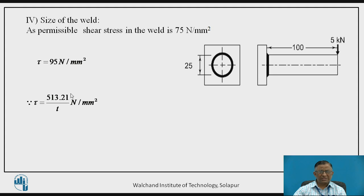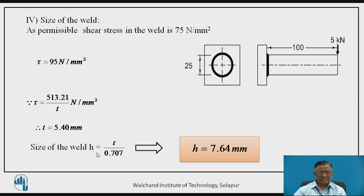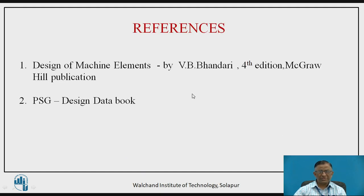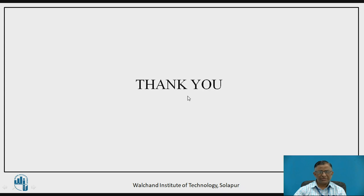Once we get the resultant shear stress value, we equate it to the allowable limit of 95 N/mm². Using that equation, we get throat size T = 5.40 mm, and then the weld leg size H = T / 0.707, resulting in H = 7.64 mm. So for this round bar welded to a vertical support subjected to bending moment, the weld size is 7.64 mm. These are my references. Thank you.